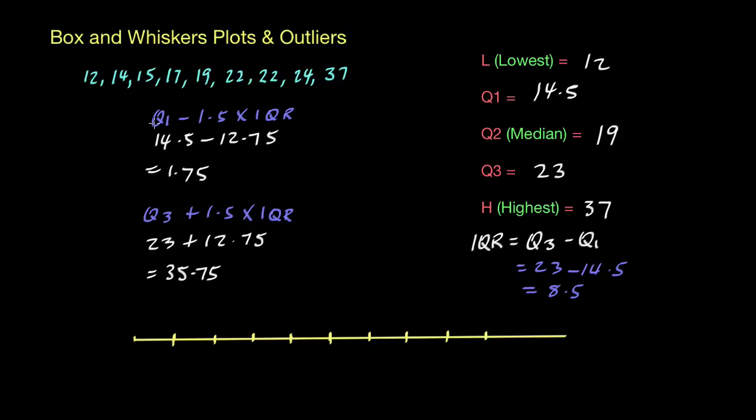So the way this formula works is we're looking at Q1, which is 14.5, that exists right here on that data set. That's Q1, and we're going down 12.75. That's one and a half of these IQR numbers, 8.5 there, so we're going down 12.75, and that takes us right down here until we get to 1.75, which is all the way down here.